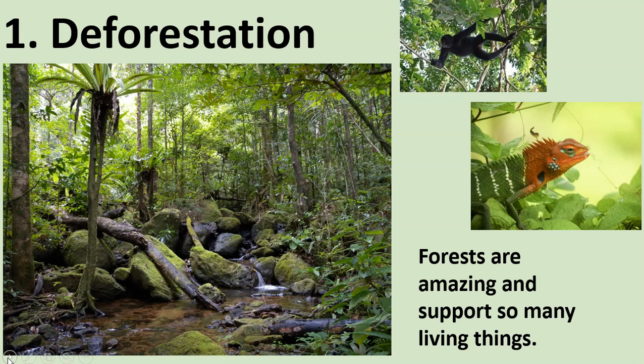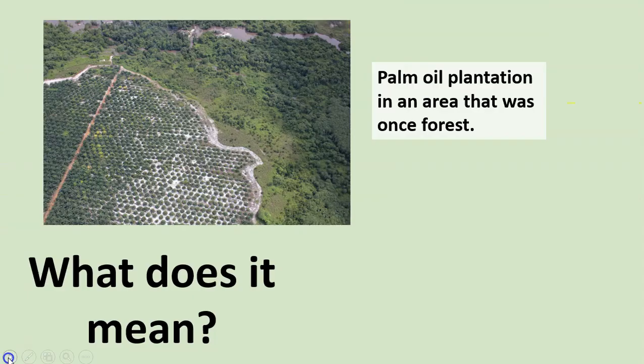Let's start with deforestation. As you can see, forests are amazing and they support so many living things. Deforestation is the clearing of huge areas of forest and it's having a really dangerous impact on the living things in that environment. For years and years we've cut down trees for firewood and to build homes and to make furniture, but it wasn't a problem initially until there were more humans. The roots of trees strengthen the ground and stop soil erosion, which means it stops soil from wearing away. So deforestation does have a huge impact on many things.